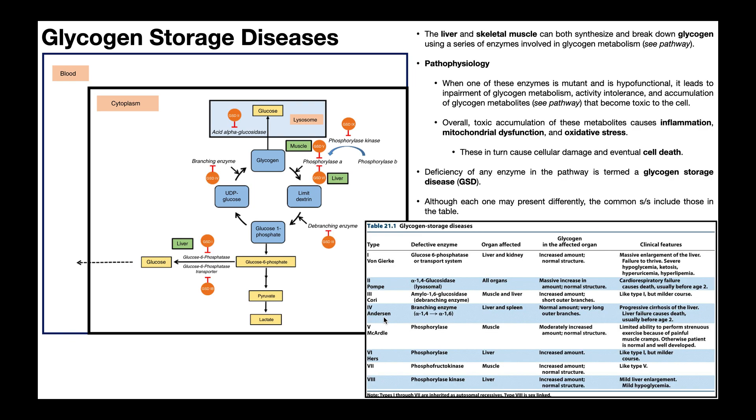Type 4 is called Andersen's disease. This is going to affect the branching enzyme right here, which is going to polymerize UDP glucoses, specifically the glucose part, into the glycogen polymer. This is going to affect the liver and the spleen, and it's going to cause progressive cirrhosis of the liver. Liver failure is normally the cause of death also before the age of two. So kind of like Pompe disease type 2, you could also make an argument that this is the most severe of the glycogen storage diseases, both 2 and 4 causing death before the age of 2.